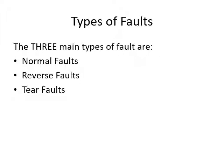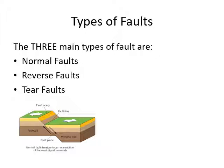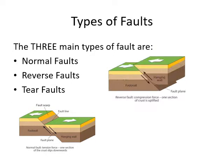There are three types of faults that can be created depending on whether you have compression, shearing or tension: normal faults, reverse faults or tear faults. The first is our normal fault - NFT, no effing talking in class - a normal fault is created by tension. The earth's crust is separated at divergent plate boundaries and the earth's crust slips down relative to the earth around it.